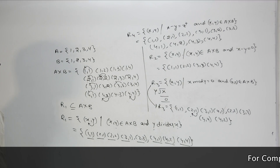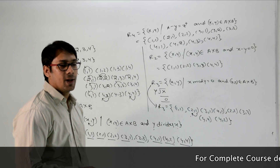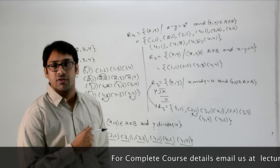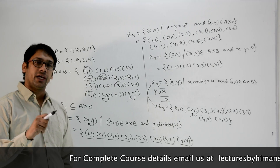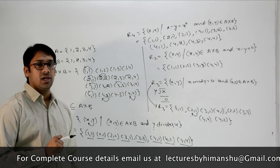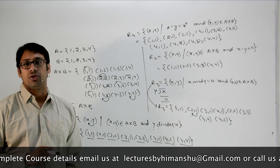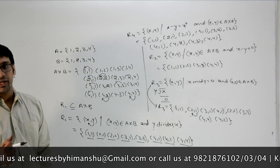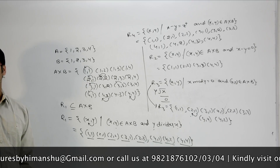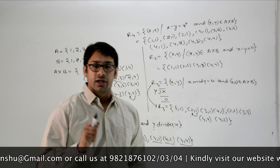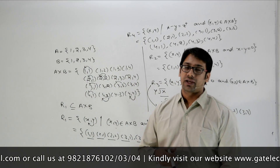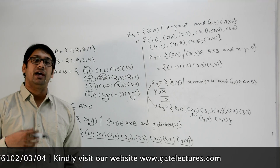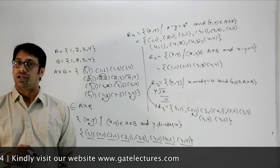So when defining a relation, it is always a subset of the cross product satisfying some condition. For example, in DBMS, if you take a set of roll numbers and a set of names, the cross product contains all combinations, but the relation only includes the valid roll number-name pairs. Now let us look at the different types of relations: reflexive, irreflexive, symmetric, asymmetric, anti-symmetric, and so on.